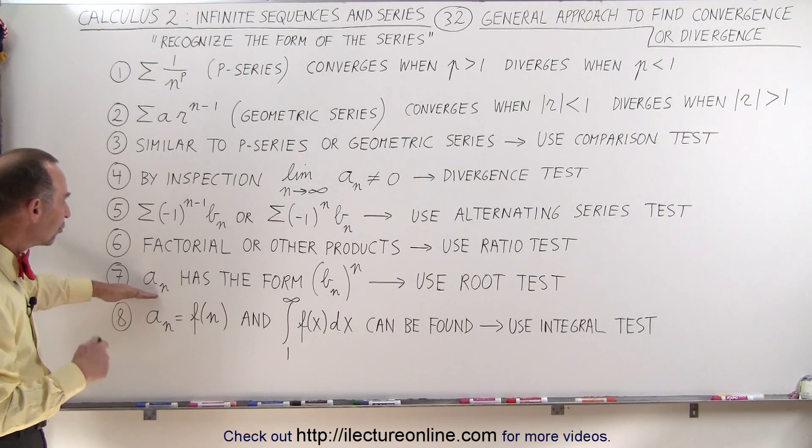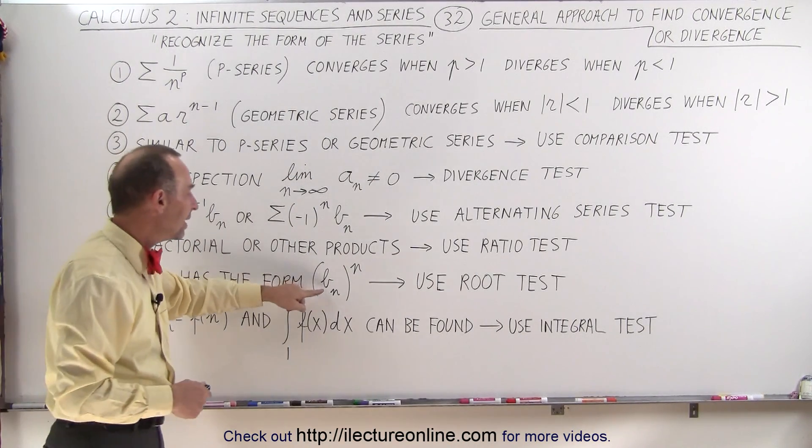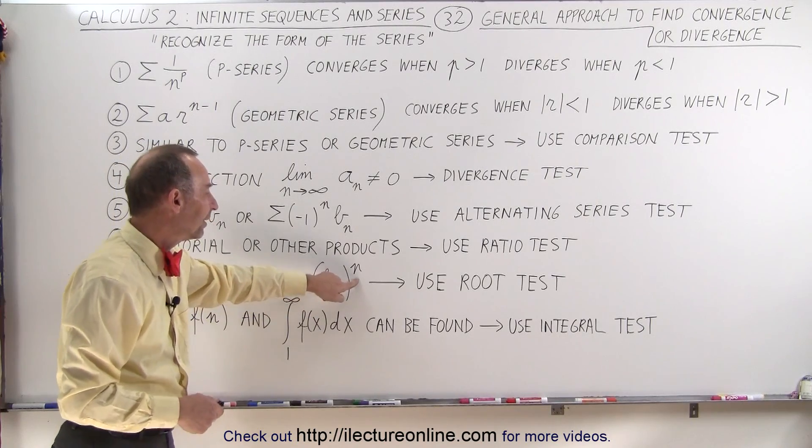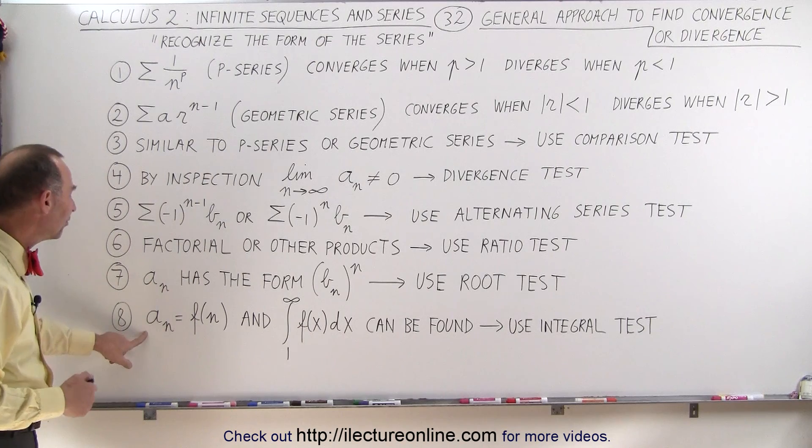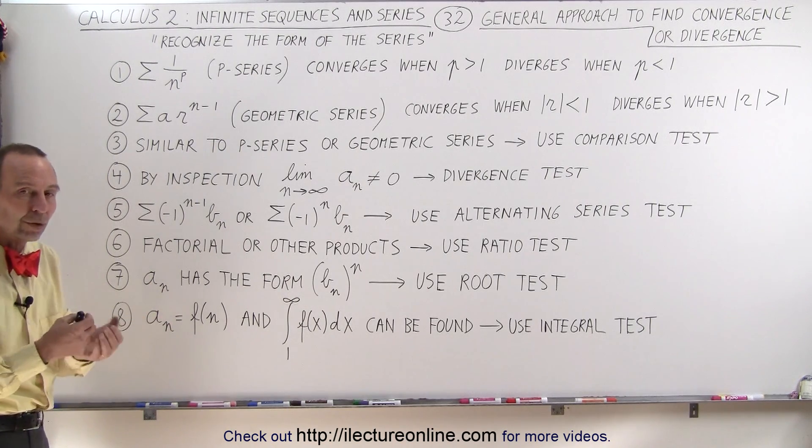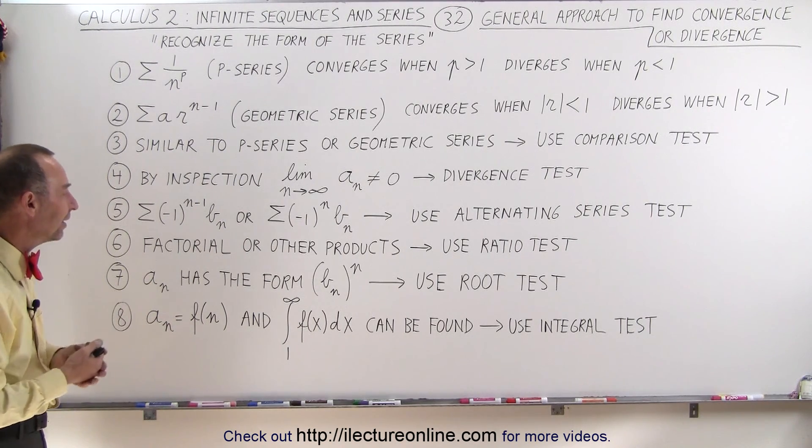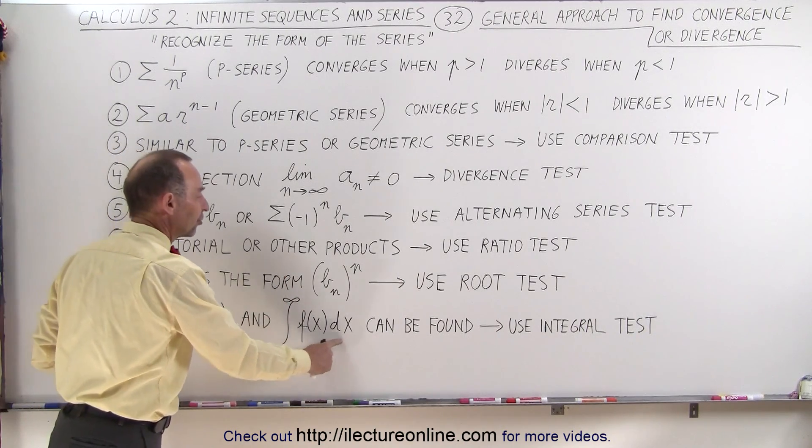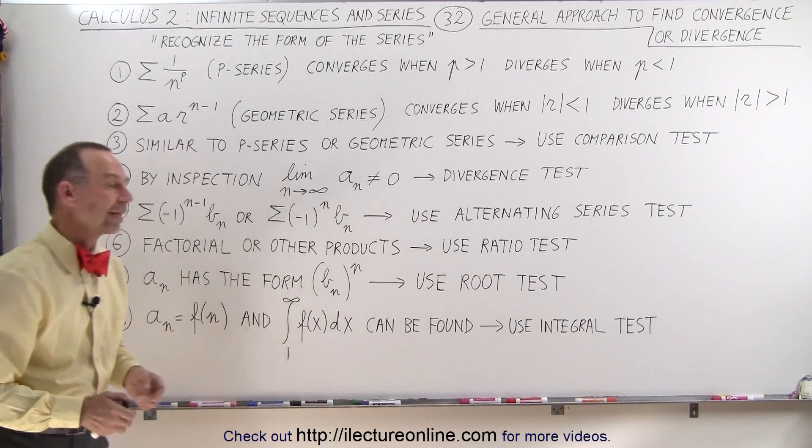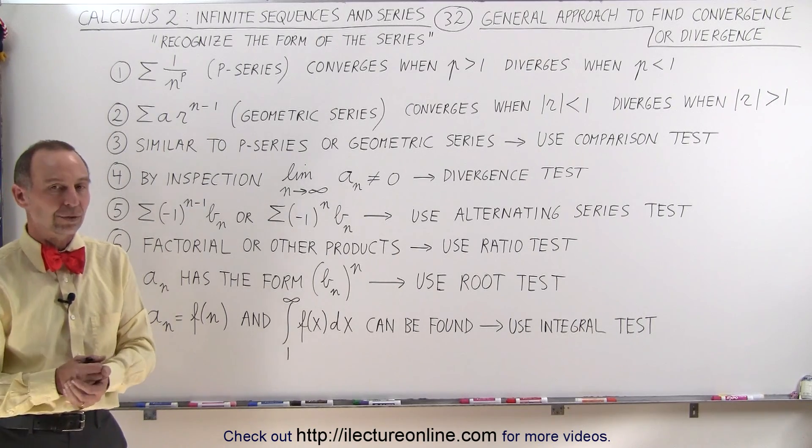If every one of the terms has the form b sub n to the n power then we have to use the root test. And finally if we have a sub n being a function of n, in other words if every term is actually a function of n and we can find the integral from 1 to infinity of the function dx, then we can solve it like that. That's called using the integral test.